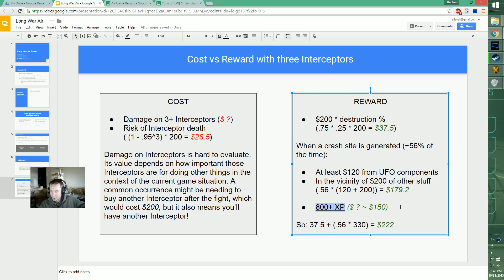That adds up to $179. Plus 800 experience - really difficult to quantify. It's valuable - that's like two or three level ups at this stage of the game. Each level up gives you considerably more stats than a scope. If a scope's worth $70 and a level up's maybe worth $100 of stats but you can only bring the soldier every third or fourth mission, I said maybe $150. So a crash site is worth around $330. Overall that adds up to